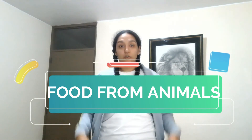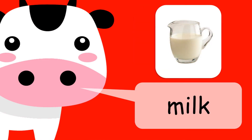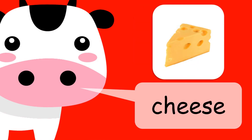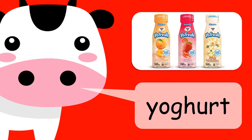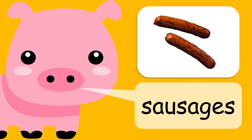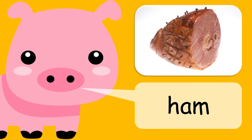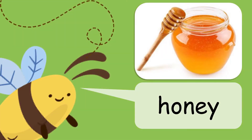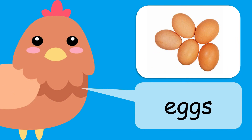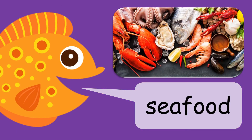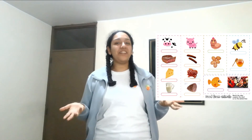Now let's talk about food from animals. Food from animals comes from very different animals. Let's see a few examples: beef, milk, cheese, and yogurt. Sausages, bacon, and ham. But there's more — like honey, eggs, and seafood. Very good. I can't wait to see what you discover. Goodbye, see you soon!